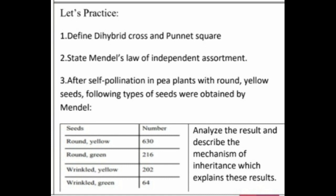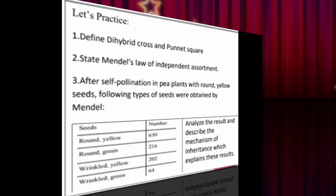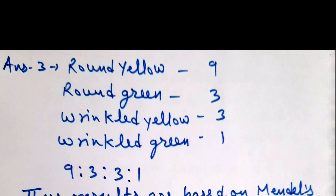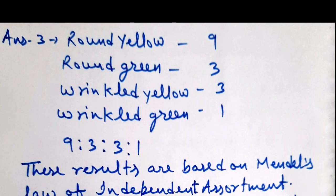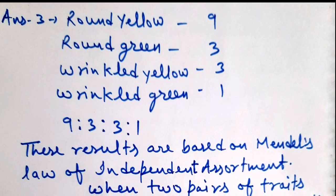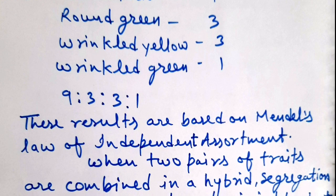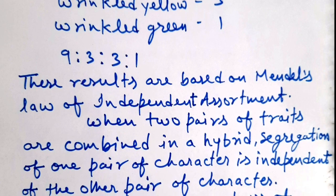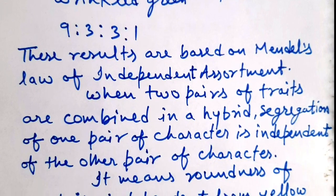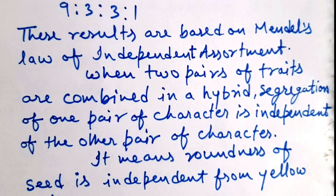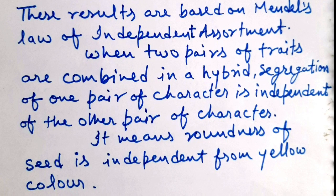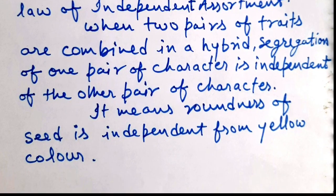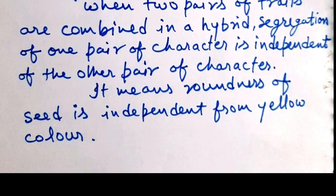After self-pollination in pea plants with round yellow seeds, the following types of seeds were obtained by Mendel: round yellow, round green, wrinkled yellow, and wrinkled green — in a major ratio of 9:3:3:1. These results are based on Mendel's Law of Independent Assortment. When two pairs of traits are combined in a hybrid, segregation of one pair of characters is independent of the other — for example, roundness of seed is independent from yellow color.